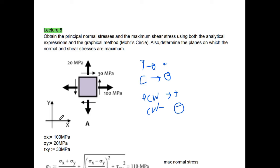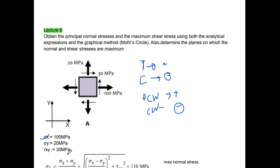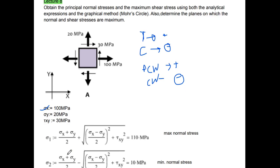From this sign convention we will assign our σx, σy, and τxy. So σx will be 100 MPa because it is tensile. Similarly σy will be 20 MPa and τxy will be 30 MPa.